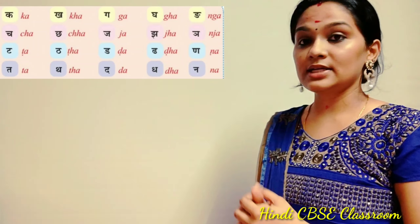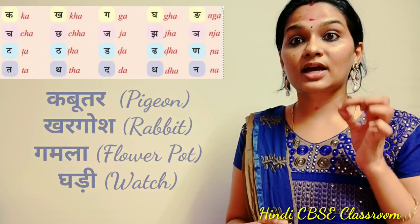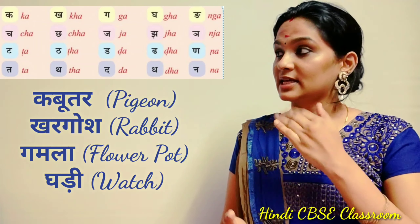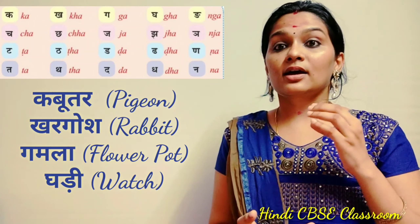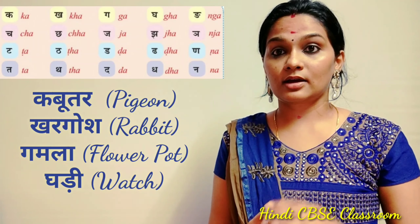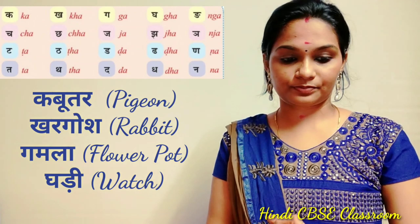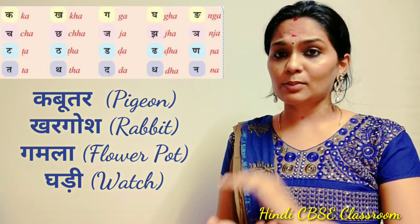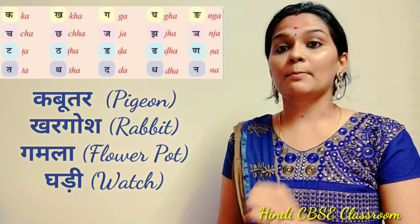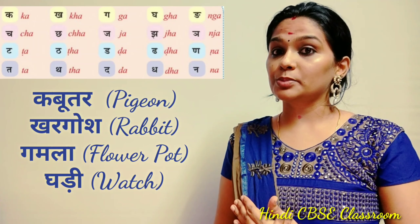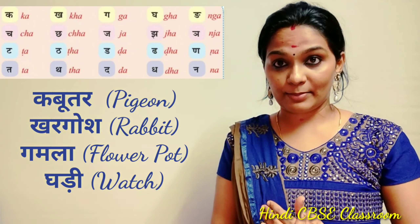Let's go through it. First one is Ka — Kabootar (pigeon). Next one is Kha — Khargosh (rabbit).